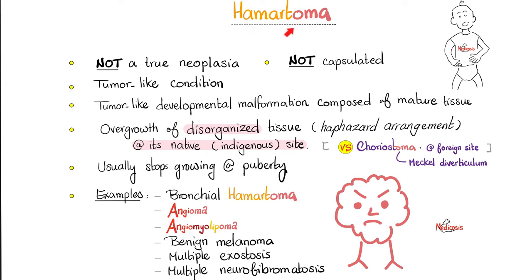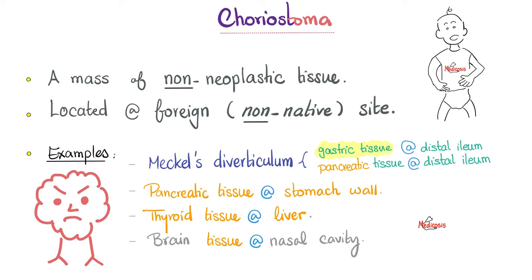Recall from the previous video that hematoma is not a true neoplasia — it is tumor-like, not an actual tumor. Hematoma is a growth of disorganized tissue at its native site: bronchial hematoma in the bronchi, angioma in the vessels, benign melanoma in the melanocytes of the skin, as they are supposed to be. But choristoma is different — choristoma is growth at a foreign, non-native site. Choristomas are non-neoplastic and the growth is at the non-native site.